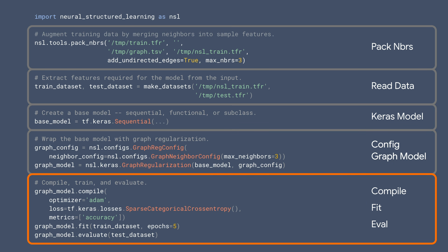You can then compile, train, and evaluate the graph Keras model, just as you would with any other Keras model. As you can see, creating a graph Keras model is really simple. It requires just a few extra lines of code.